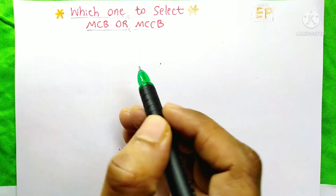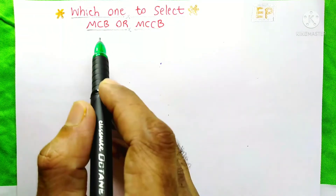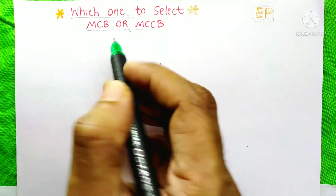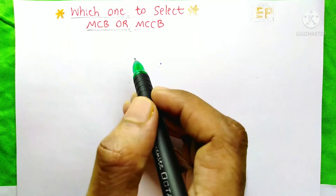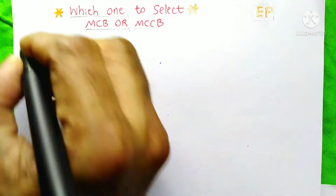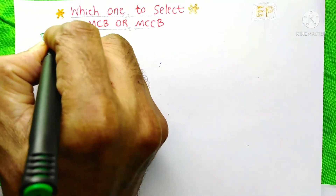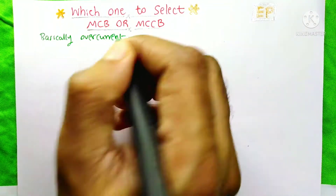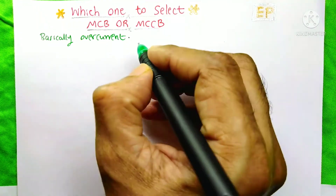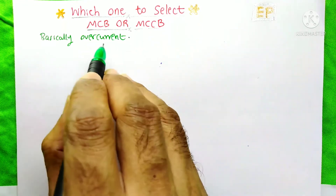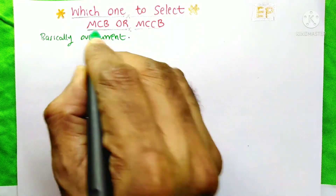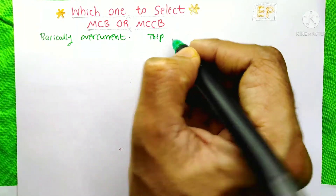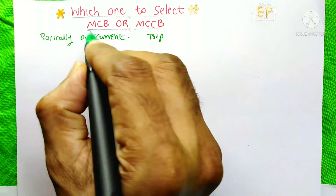For our specific application, which one do we need — MCB or MCCB? Today I'm going to break down both of these. Basically, both MCB and MCCB are overcurrent protection devices, which means whenever the current increases on our system beyond the rated current of the MCB or MCCB, the circuit will trip and protect our circuit. That is the basic function.